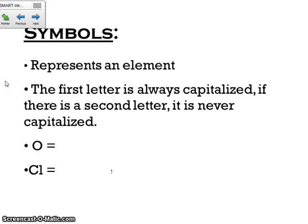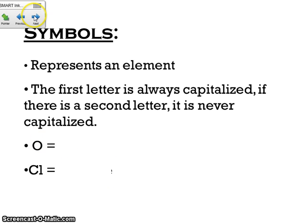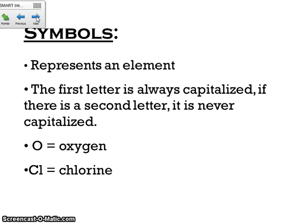So first of all, symbols. Symbols are the letters that represent the elements. The first letter is always going to be capitalized. If there are two letters, the second one is never capitalized. So if you look at your periodic table, you find the letter O in one of the squares — that represents oxygen. C-L, found towards the right side of your periodic table, represents chlorine. Each element has a one or two letter symbol that saves us time so we don't have to write out all the names.